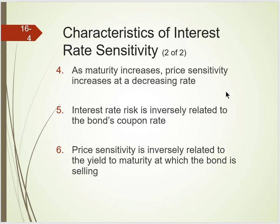Interest rate risk is also inversely related to the coupon rate, so high-coupon bonds will typically have low interest rate risk. Price sensitivity is also inversely related to the yield to maturity at which the bond is selling — if it has a higher yield, it's going to have lower price sensitivity.